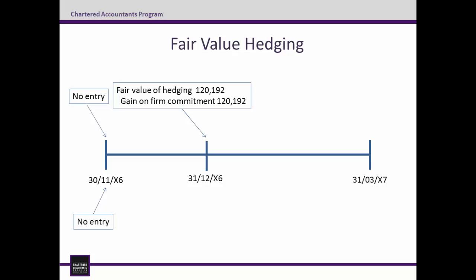We are also provided information that the fair value of the FX forward is negative $131,000, a reduction of $131,000. This has come about because the Aussie has strengthened against the Euro, so the Aussie value of the €5,000,000 that EasyBits will receive is now worth less than the $7,812,500 they agreed to pay for it. To account for the hedging instrument, the entry is a debit loss on FX forward $131,000 and credit FX forward $131,000. The FX forward goes onto the balance sheet. The $10,808 difference has now been recognised in profit and loss as hedge ineffectiveness.